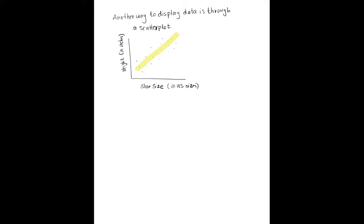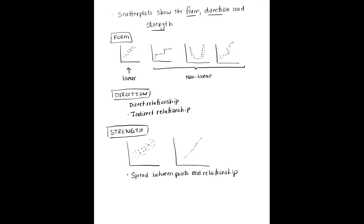I have put a yellow highlighted area to indicate the form and the direction of the relationship. So scatter plots can show us the form, direction, and the strength of a relationship.